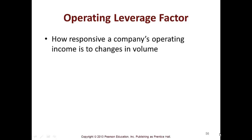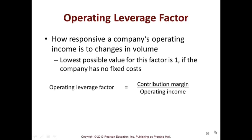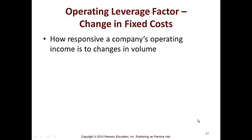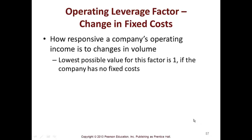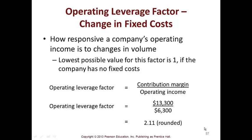The operating leverage factor measures how responsive a company's operating income is to changes in volume. The lowest possible value for this factor is 1, if the company has no fixed cost. The operating leverage factor is calculated as contribution margin divided by operating income. In this changed fixed cost example, the operating leverage factor comes out to 2.11 rounded.